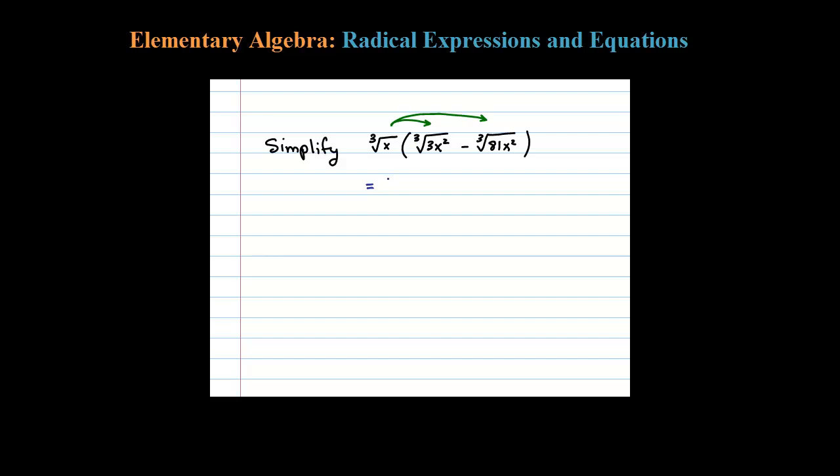So this equals cube root of X times 3x² is 3x³, minus cube root of X times 81x² is going to be 81x³. Now before I distribute those, I'm going to rewrite 81 in terms of its prime factors.